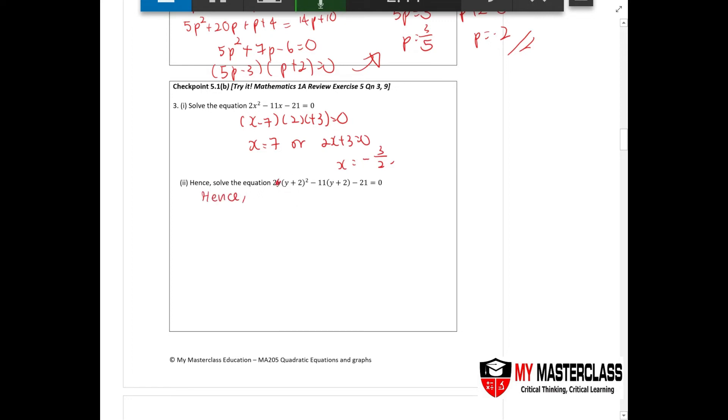Now then hence solve for this question. So what does this tell you? It tells you that y plus 2 is actually x. So y plus 2 equals to 7, y equals to 5, or y plus 2 equals to negative 3 over 2, of which you will make common denominator. That means I want to remove my fractions, I'll actually multiply them throughout. I'll get 2y equals to negative 7, y equals to negative 7 over 2.